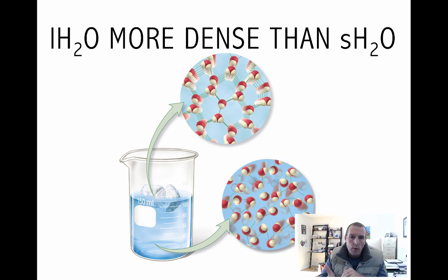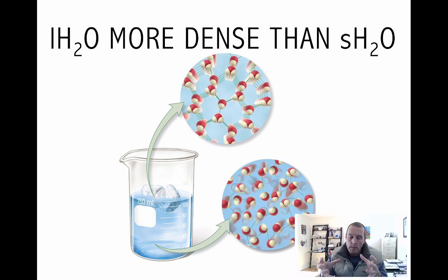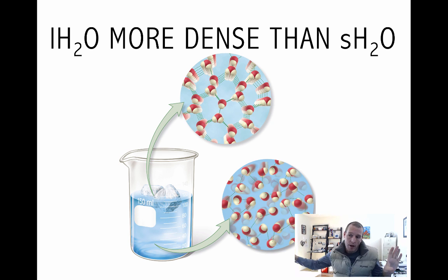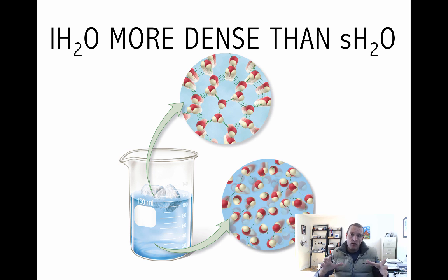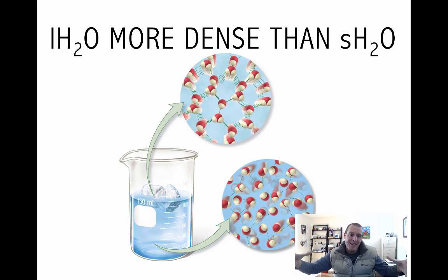Why is liquid water more dense than solid water? Think back to those hydrogen bonds. One water molecule can make up to four hydrogen bonds with its neighbors. When the temperature in water drops, the hydrogen bonds stabilize and all four of those hydrogen bonds form. All the adjacent water molecules get pushed away the distance of the hydrogen bonds, causing the water to expand. It's the same amount of matter, but occupying a greater volume, so its density has dropped.